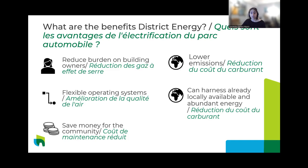District energy systems reduce greenhouse gas emissions by replacing less efficient equipment in individual buildings with a more efficient central power plant, and by producing electricity for the central grid that can displace coal-fired and other higher-emission electricity sources. Finally, they can harness locally available and abundant energy sources.